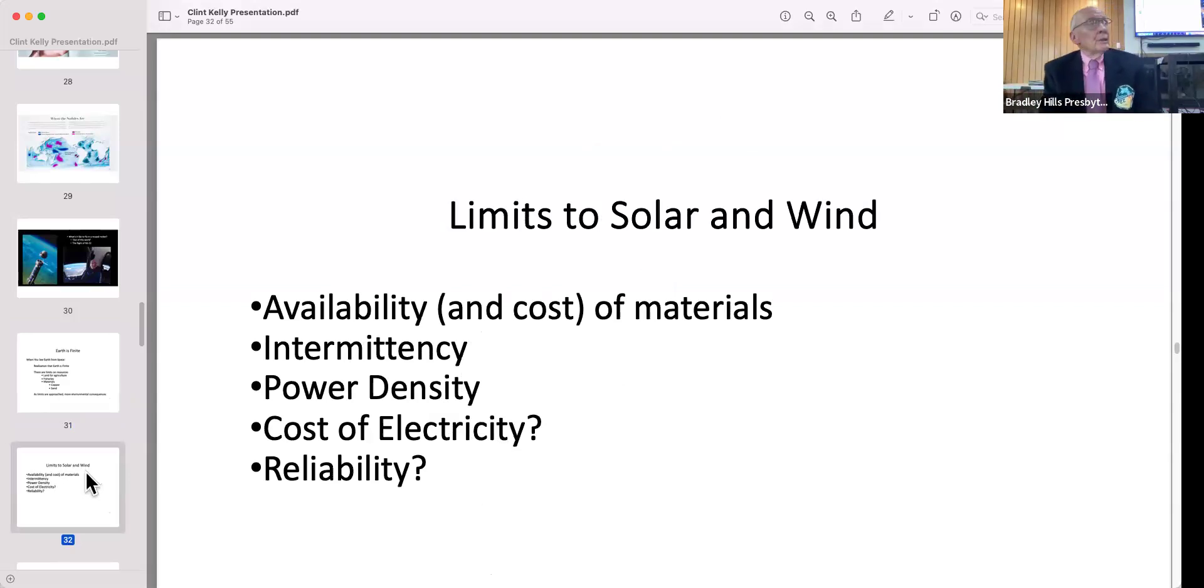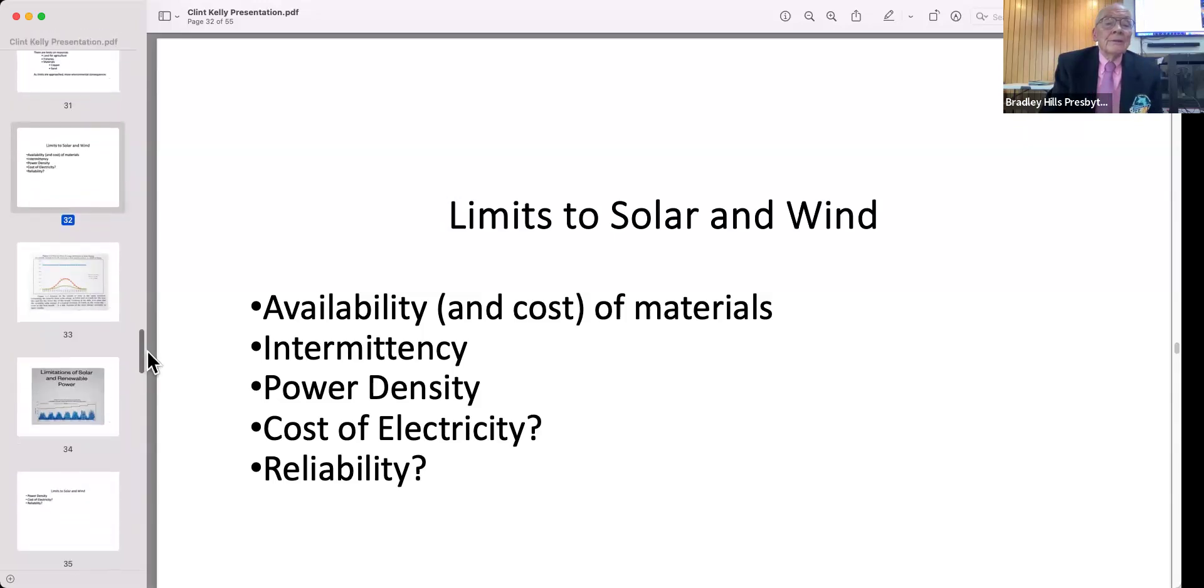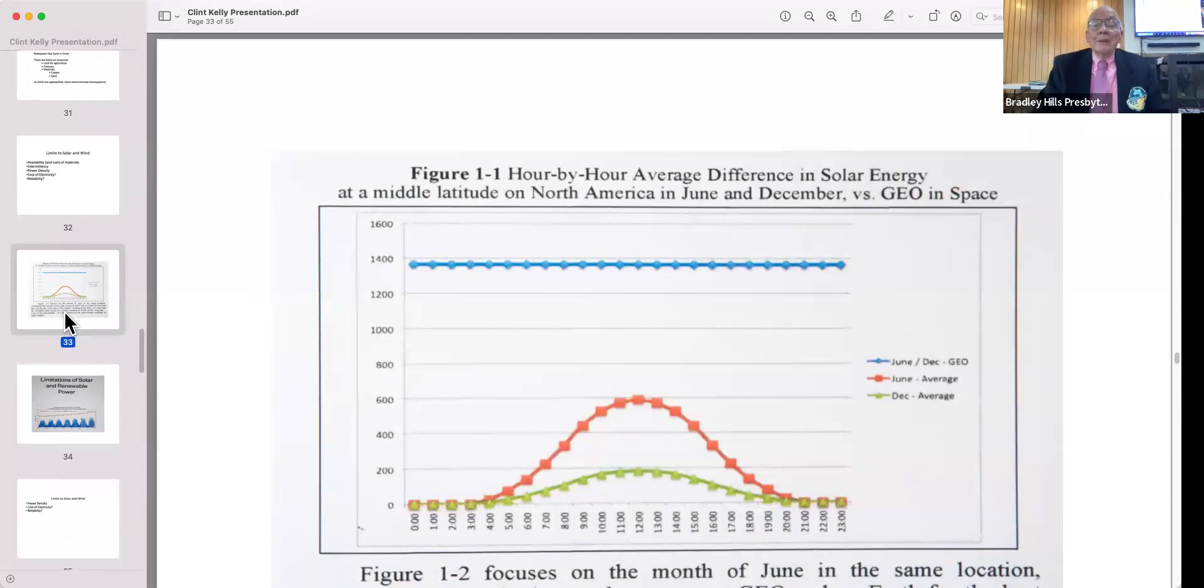I'm going to argue there are limits to solar and wind. If I had more time I would talk about intermittency, power density, cost of electricity, and reliability. Intermittency is because the sun doesn't always shine, and the amount of insolation that you get is a function not only of where you live and whether it's cloudy or not but also the seasons.